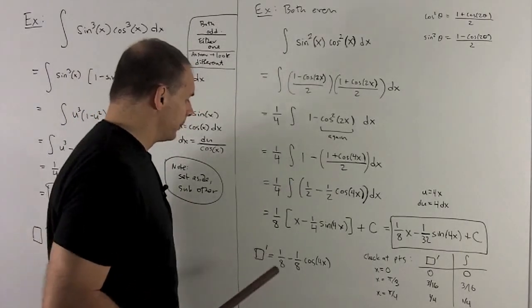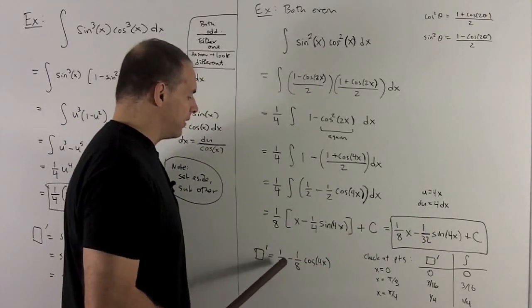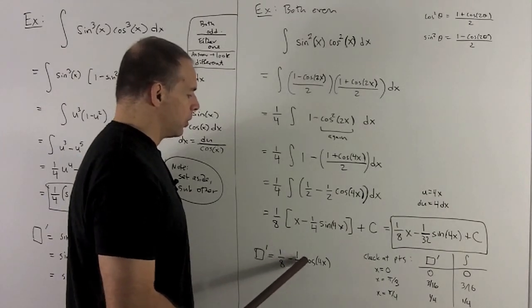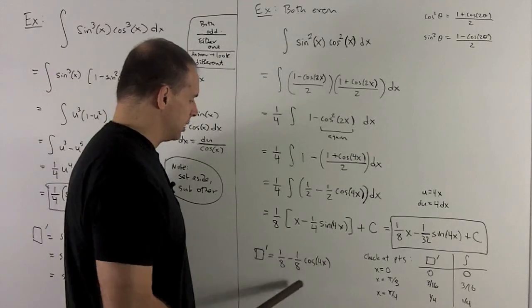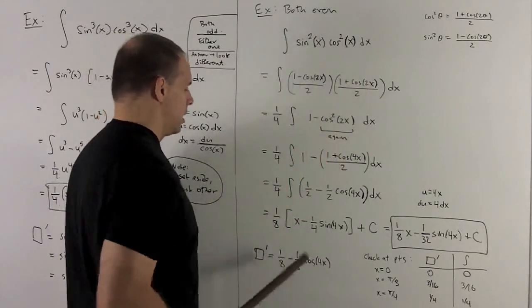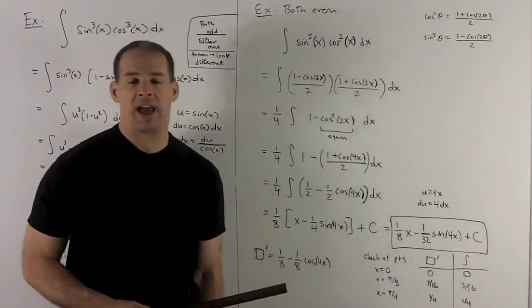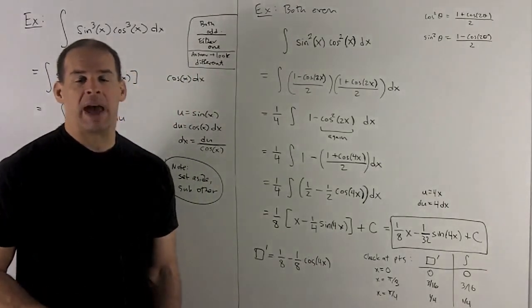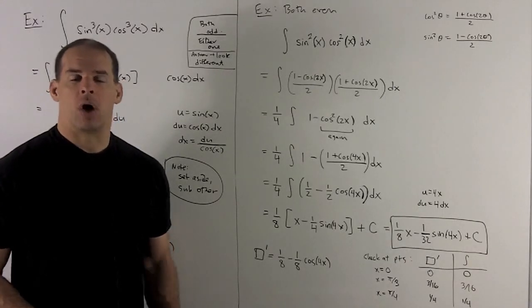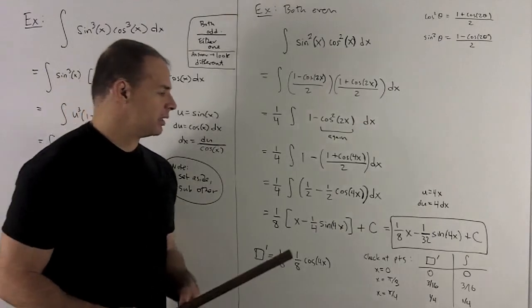Let's check our answer. I'm going to take what's in the box and take its derivative. So that will give me a 1 eighth minus a 1 eighth cosine 4x. Now, we want to go from this to this here. Notice I'm going to have to do a couple substitutions to get that 4x down to an x. And I don't have enough room on the board. So let's be lazy about it and just check it at a few points.